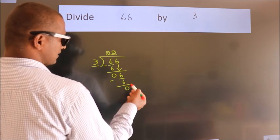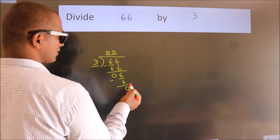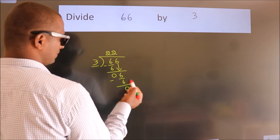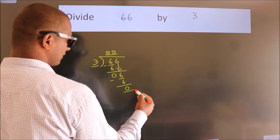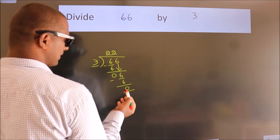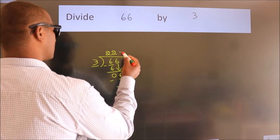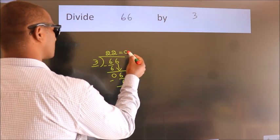After this, no more numbers to bring down. And we got remainder 0. So this is our quotient.